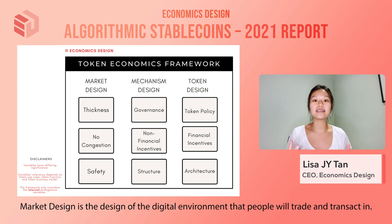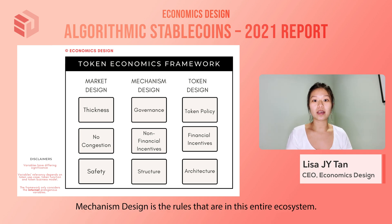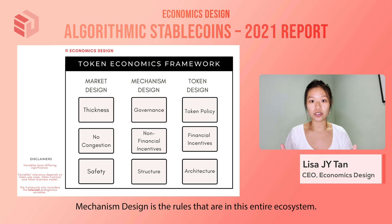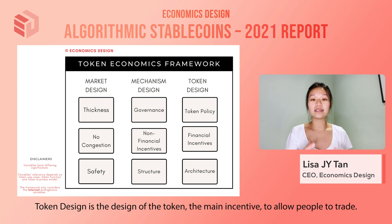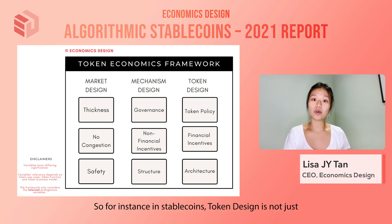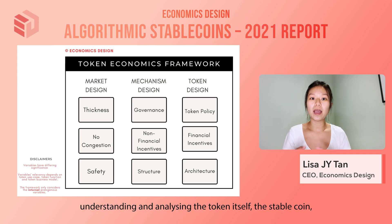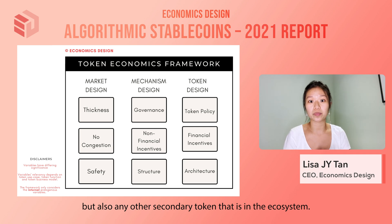Market design is the design of the digital environment that people will trade and transact in. Mechanism design covers the rules within this entire ecosystem. Token design is the design of the token — the main incentive to allow people to trade. In stablecoins, token design is not just understanding and analyzing the stablecoin itself, but also any other secondary token that comes into the entire ecosystem.